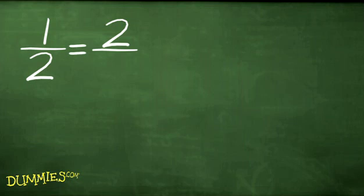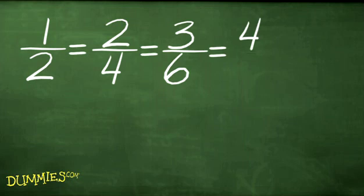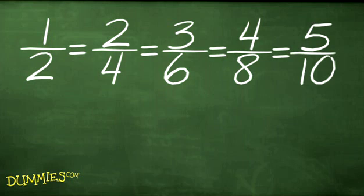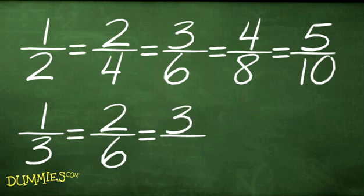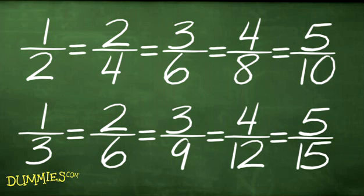Because you have a basic understanding of fractions, you know that one-half can also be two-fourths, three-sixths, four-eighths, and so on. Similarly, one-third can be two-sixths, three-ninths, four-twelfths, and so on.